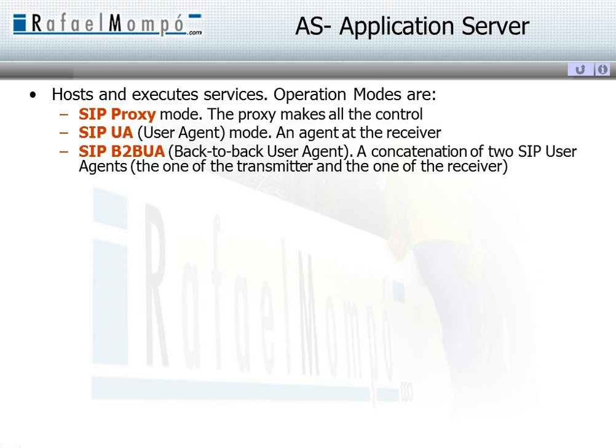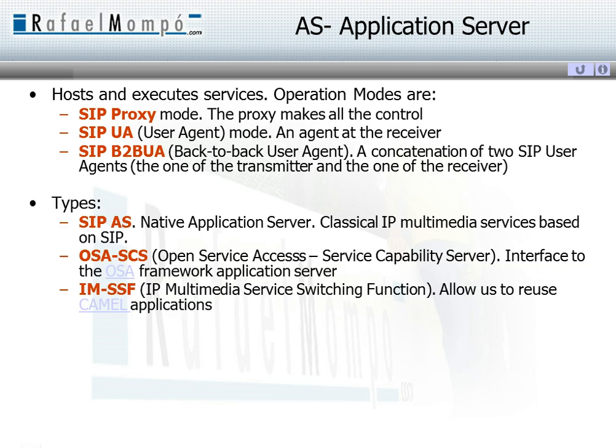There are three operation modes and services can be of different types. The main type is SIP services, which are the native IMS services, but there is also support for 3G and 2G. We will see such types of 3G and 2G application servers in the following slides.